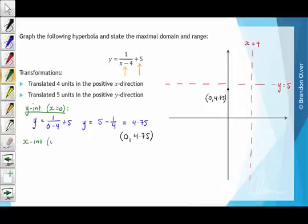That occurs when y equals 0, so we have 0 equals 1 divided by x subtract 4 plus 5. Subtracting 5 from both sides of the equation, we find that negative 5 equals 1 over x subtract 4.